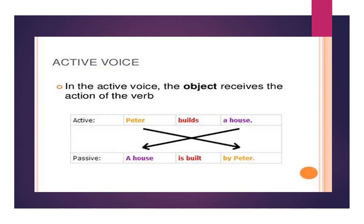What's the difference between the active and the passive? If you look at this example — in the active voice, I begin with the subject and then the verb and then the object. When I turn the sentence into passive, I have to begin with the object and then the verb and then the subject.